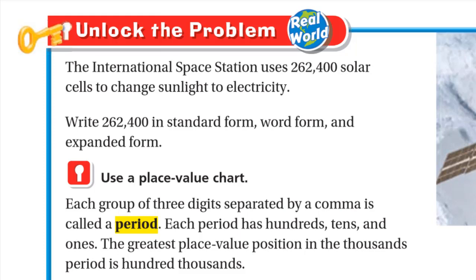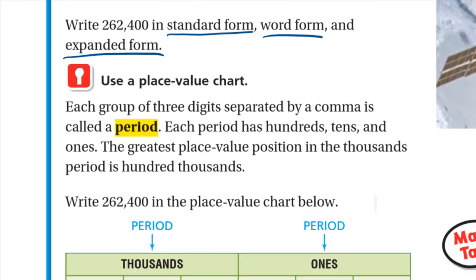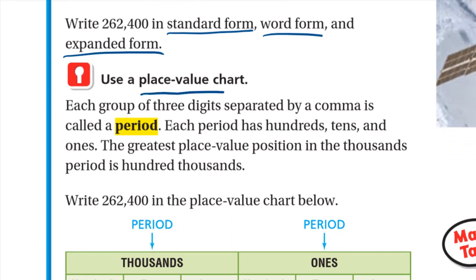We need to write 262,400 in standard form, word form, and expanded form. We will use something called a place value chart. Each group of three digits separated by a comma is called a period. Each period has hundreds, tens, and ones. The greatest place value position in the thousands period is hundred thousands.